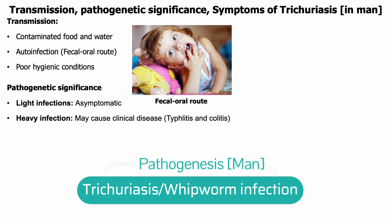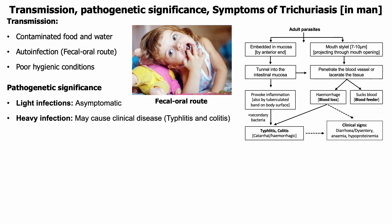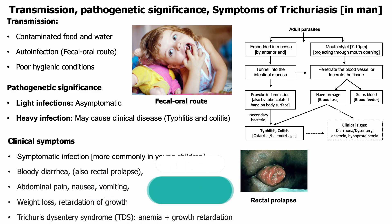Whipworm infection in man is mostly asymptomatic. Symptomatic infection more commonly occurs in young children. In heavy infection it causes catarrhal or hemorrhagic typhlitis and colitis. Symptoms include bloody diarrhea, rectal prolapse, abdominal pain, nausea, vomiting, weight loss, and retardation of growth. Growth retardation and anemia are characteristic features of TDS — Trichuris Dysentery Syndrome.